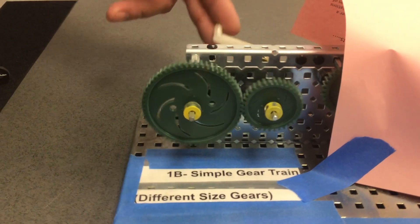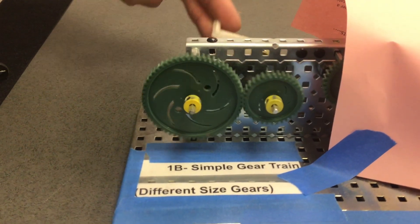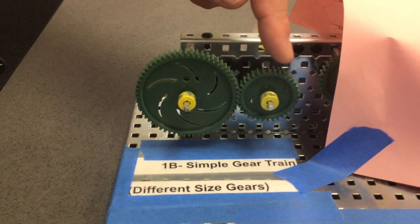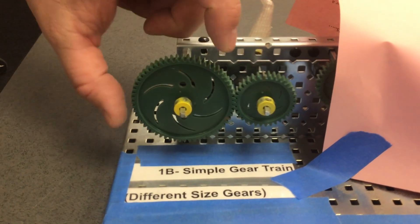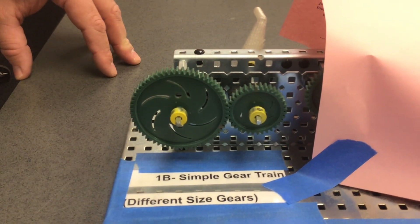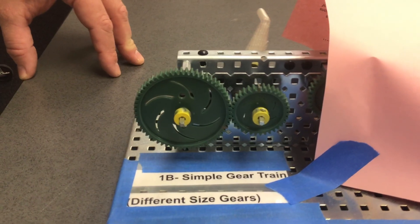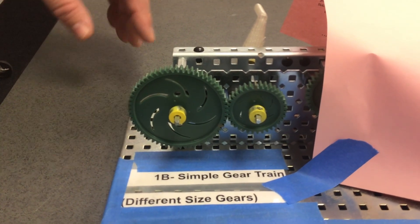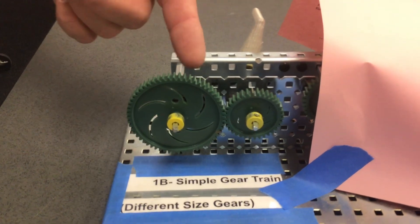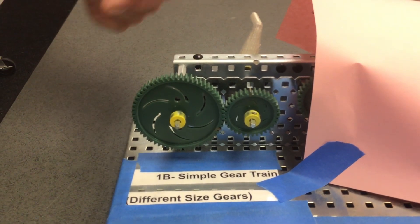That's a five to three ratio. This transfers the power from the input to the output. Having the larger gear in the output will provide more torque and power, but less speed. Increased power, decreased speed.